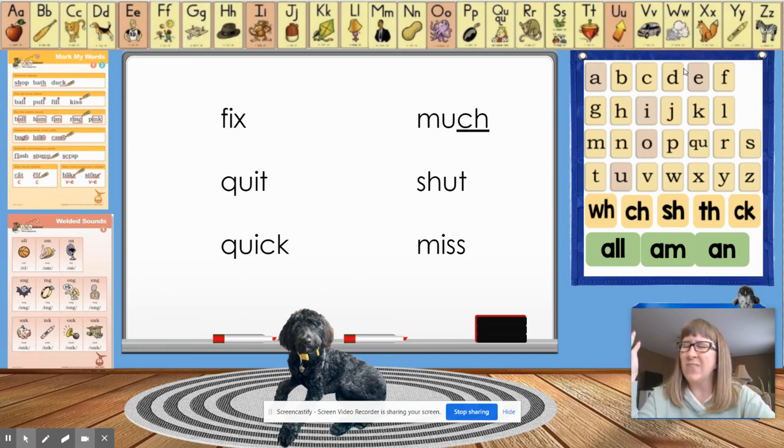Q and U are never apart. Wherever there's a Q, there's a U. Let's look at the next word, the word shut. Somebody raise your hand and give us a sentence for shut and tell us if we need to mark it. That's right, we mark it by underlining the digraph SH.